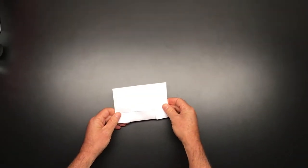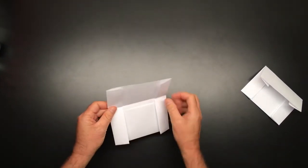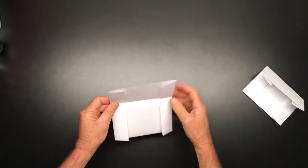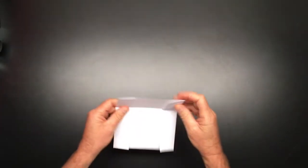An incorrectly folded packet will look like this with the gap here where the specimen can slip out. No good. This is the correct way.